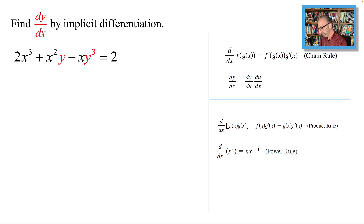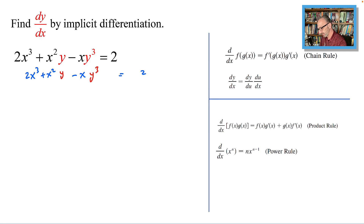So by having 2x³ + x²y - xy³ = 2, we will be applying the derivative to both sides with respect to x. So let's do that — d/dx.